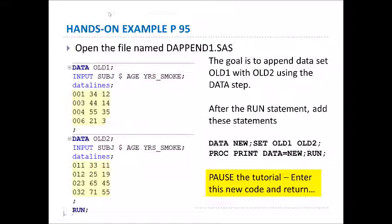This hands-on example is from page 95. Open the file called dappend1.sas. You'll see that this creates two datasets: one called old1, which has four records, and old2, which also has four records. We're going to take these two datasets and append them to one another using the code on the right — data new, set old1, old2 — and then proc print to see the results.